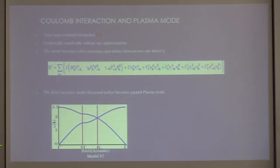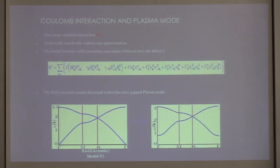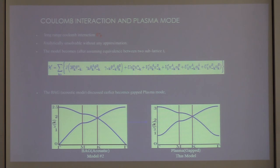For neutral bosons living on the honeycomb lattice there will be a sound mode of some sort. What's interesting is that this already contains the seed of explaining what will happen when you turn on interactions of the bosons: the dispersion flattens. This is in contrast to the effect of Coulomb interaction in graphene, and we'll come to that if time permits.